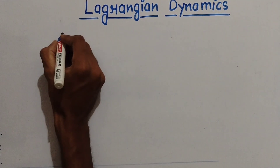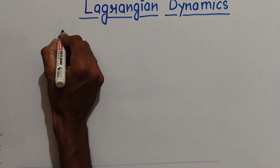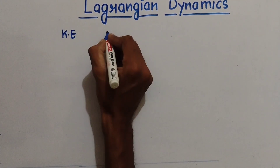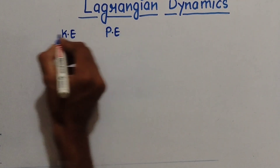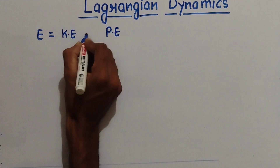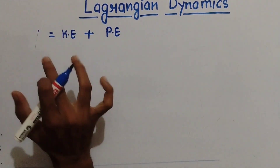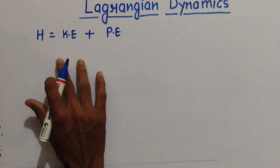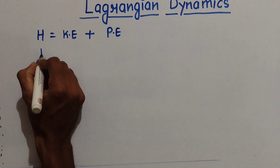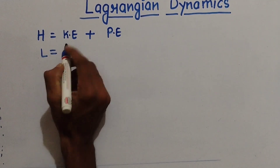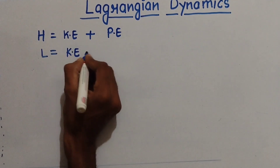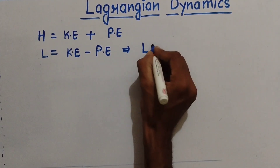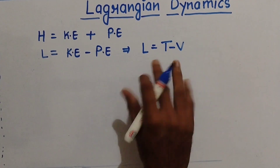So, what is Lagrangian in classical mechanics? We know that kinetic energy and potential energy exist, and the total energy is given as their summation. In classical mechanics or quantum mechanics we write it as the Hamiltonian. Similarly, for Lagrangian there is a term which is just the difference of kinetic energy and potential energy, and that can be written as L equals T minus V.